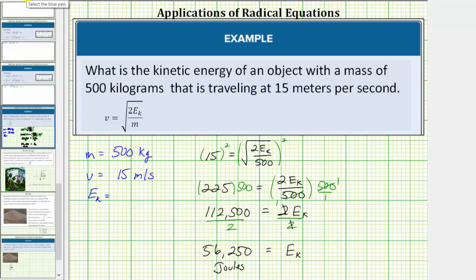So now we know the kinetic energy of an object with a mass of 500 kilograms traveling at a velocity of 15 meters per second is 56,250 joules. I hope you found this helpful. Thank you.